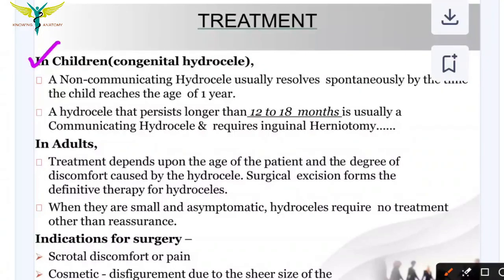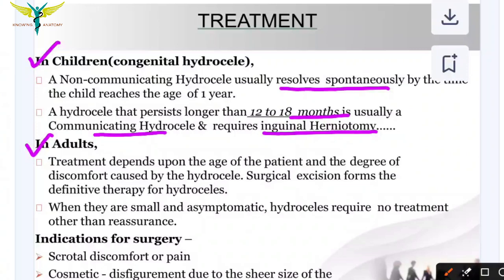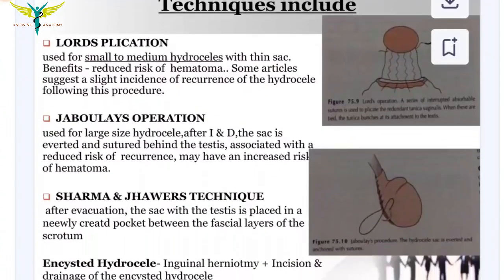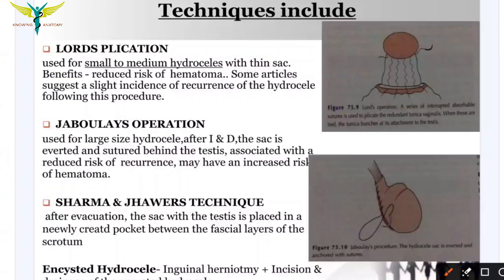In children, a non-communicating congenital hydrocele usually resolves spontaneously. If it persists longer than 12 to 18 months, it is usually a communicating hydrocele and requires inguinal herniotomy. In adults, treatment depends on age and degree of discomfort. Surgical excision is the definitive therapy. Small asymptomatic hydroceles do not require treatment — only reassurance. The main indications for surgery are scrotal discomfort, pain, or cosmetic concerns.